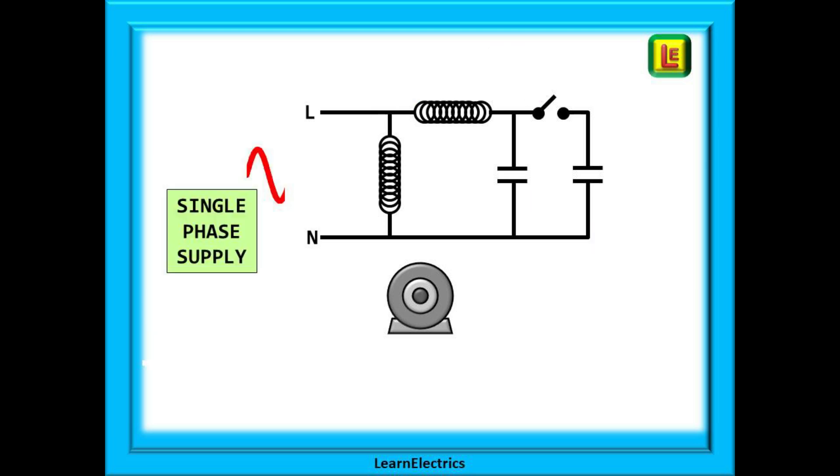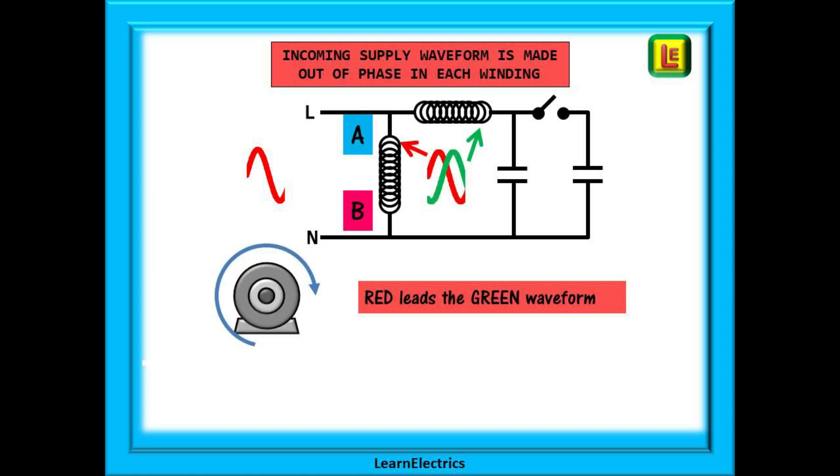A single phase supply on its own is not enough to cause the motor to operate correctly. We must do something to it and we have shown the incoming phase in red here. This incoming phase passes through one winding but the second winding has a capacitor in the circuit. This capacitor causes the phase on that winding to become out of phase. It is all to do with lead and lag in alternating waveforms and we will cover this in detail in our basic electronics series.